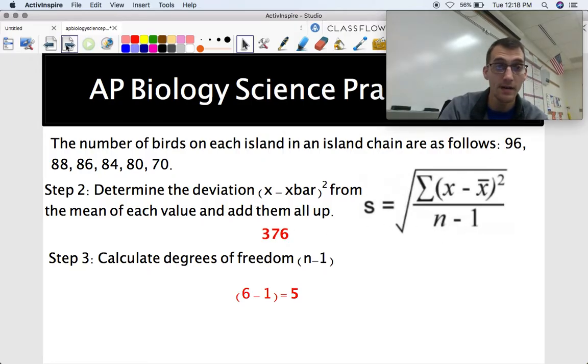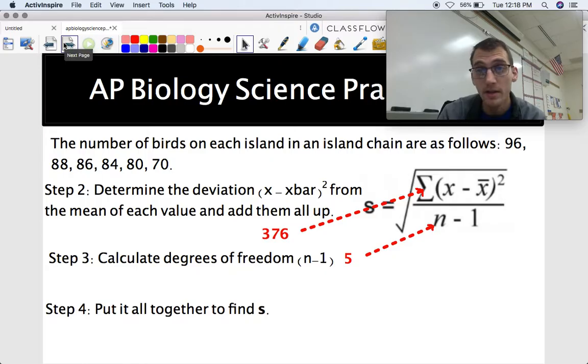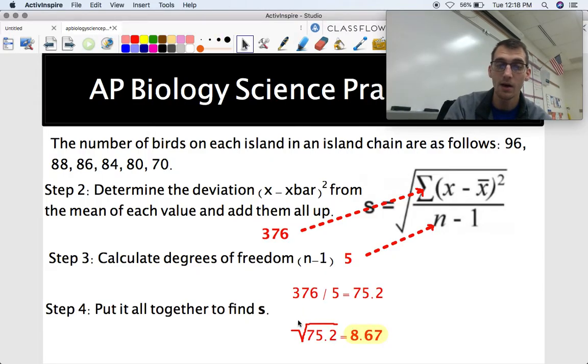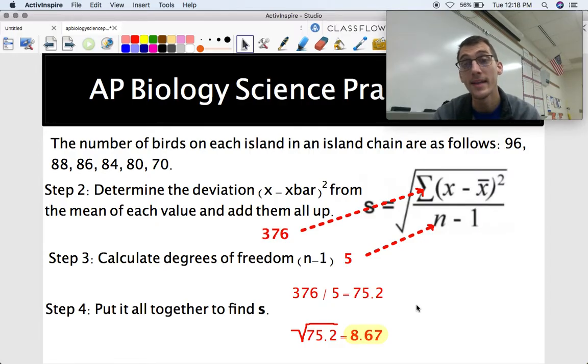So N, this number here, is representing how many data points that we have, and we have six of them. So six minus one is five. And then next step is put it all together to find S. This top value we already calculated as being 376. This bottom value is five, and then we take the square root of that. I encourage you to punch that into your calculator right now if you haven't already. And check it out, 376 divided by five is 75.2. If you take the square root of that, we get a value of 8.67. That is representing our standard deviation. How much do our data points differ, or how much do they vary from our average?